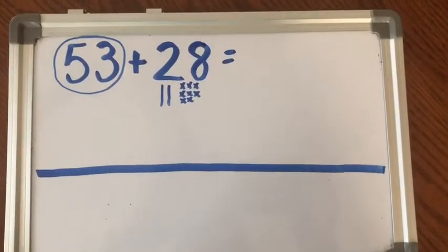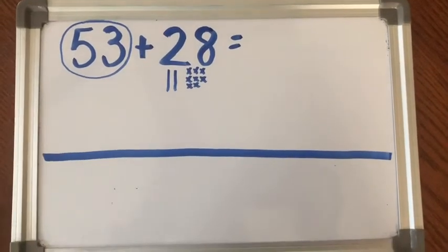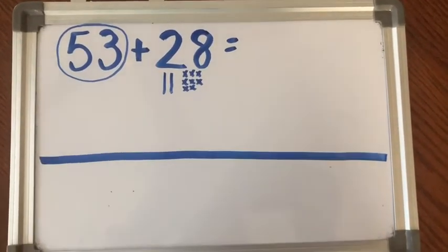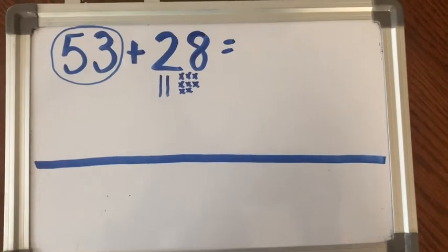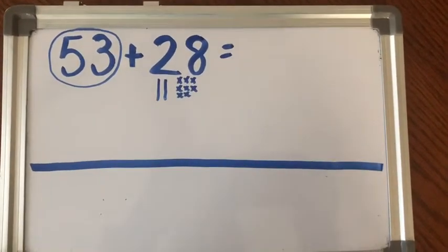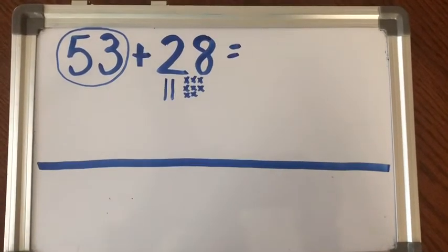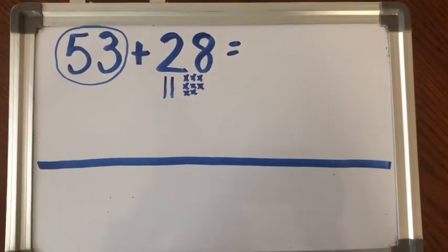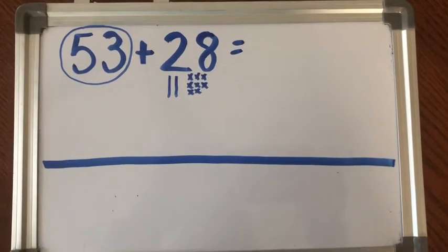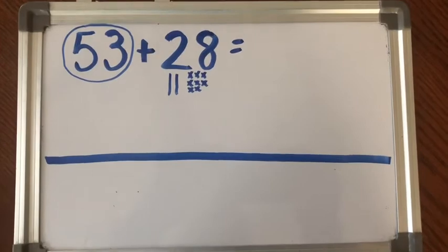My number line is set up. Of course, I needed to draw the line. I circled my bigger number, and I used base 10 blocks to represent my second number in my addition equation. So I have two rods and eight cubes. Now I'm ready to start solving using my number line as a strategy.